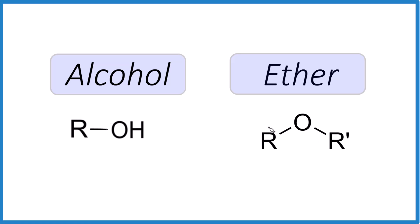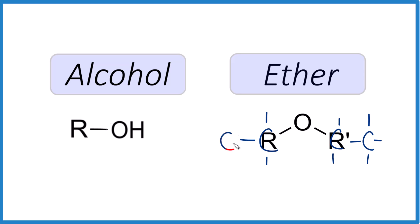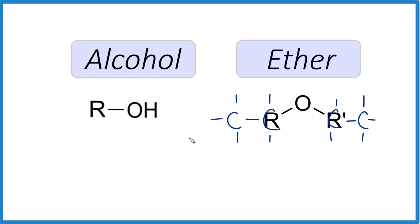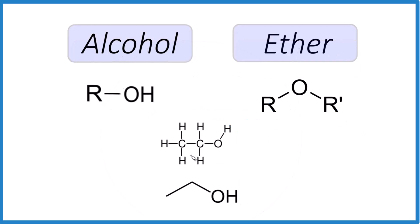In contrast, with the ether the key is we have a single bond to an oxygen and then another single bond, so the oxygen is between carbon atoms. We could have two carbon atoms where this side is different from this side, but they're both carbon atoms surrounded by hydrogens. Carbon bonds to four things, and we could have another carbon here as well — that would still be an ether, because we have carbon single bond oxygen single bond carbon.